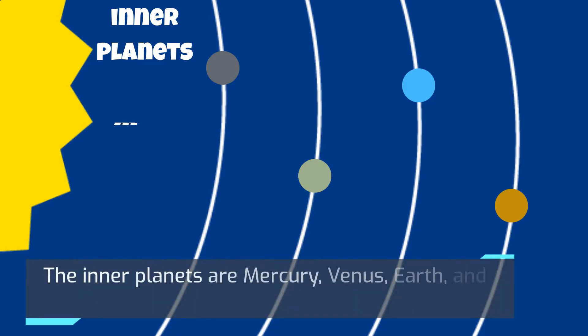The four planets closest to the Sun are called the inner planets. The inner planets are Mercury, Venus, Earth, and Mars.